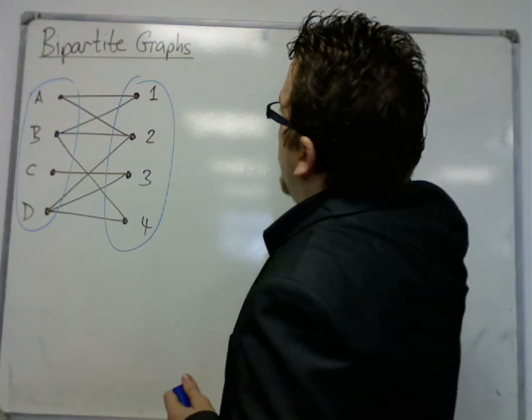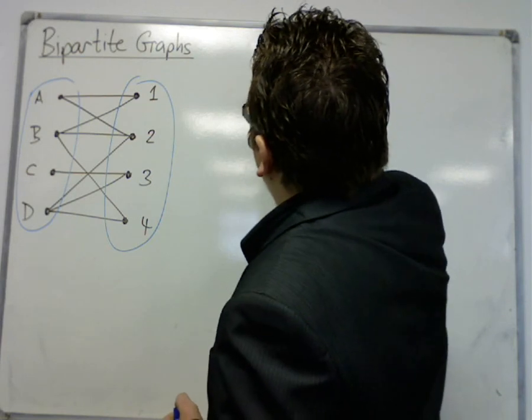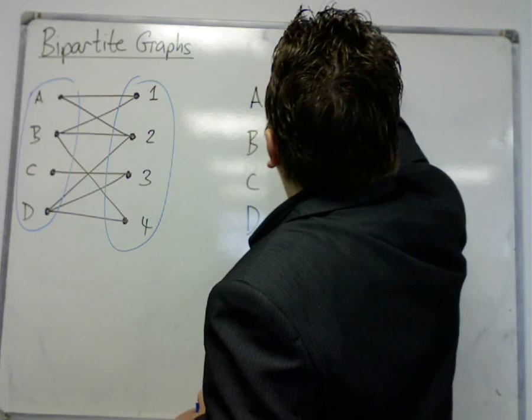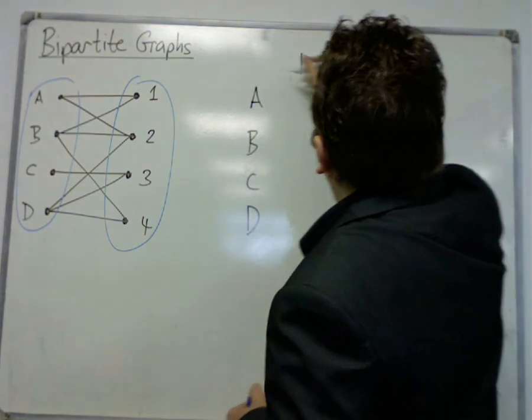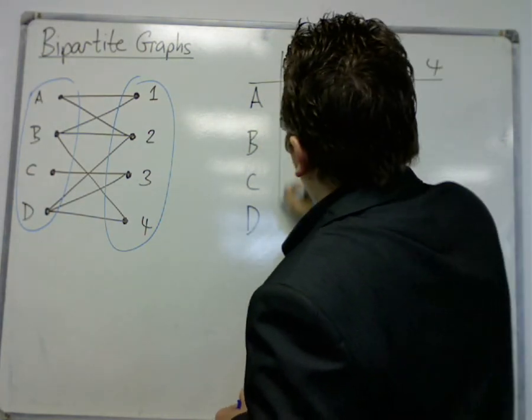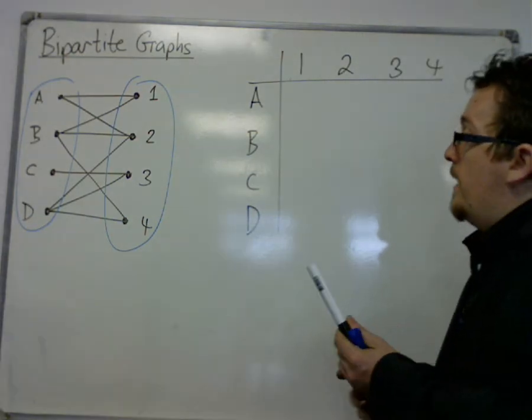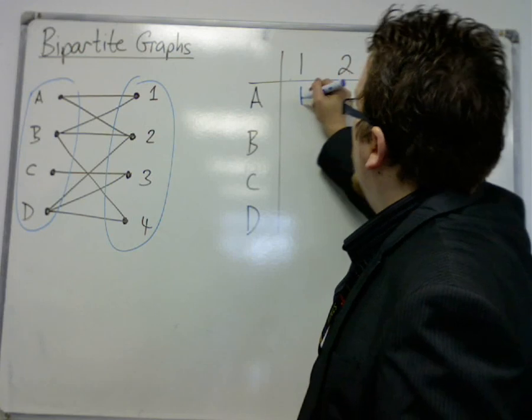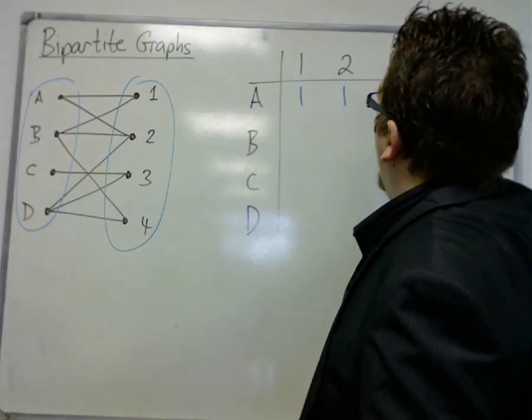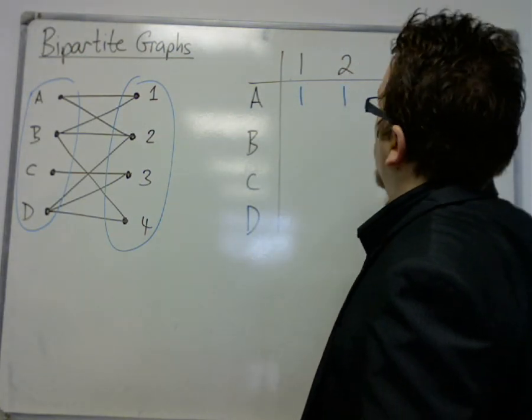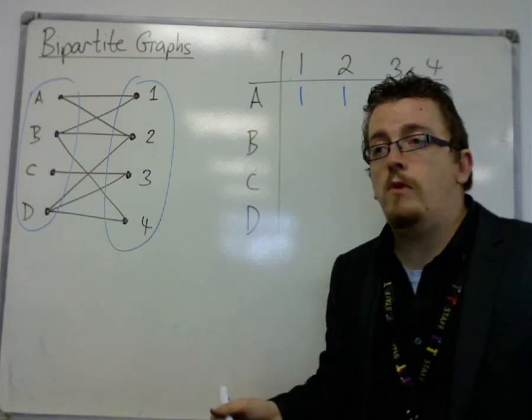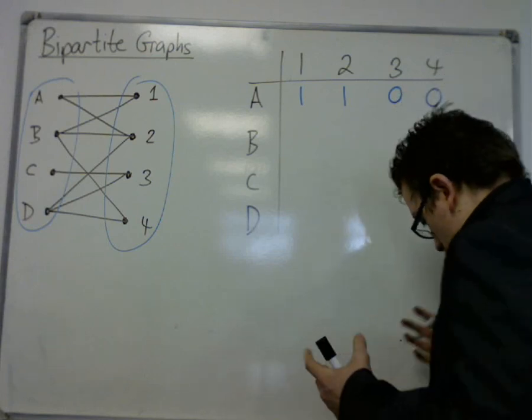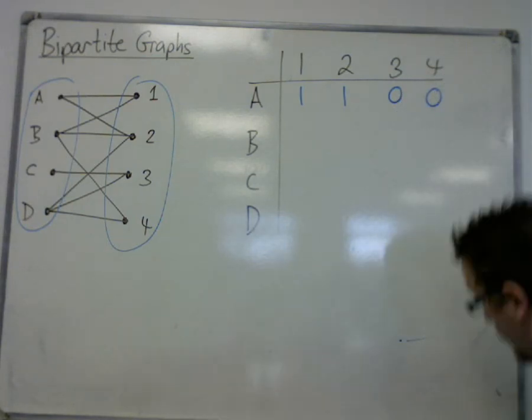And you can write this in a matrix. So A, B, C, D, and tasks 1, 2, 3, and 4. And then you can say, well, A can go to 1 and it can go to 2, but not to 3 or 4. So 1 is representing links. 0 is representing that there are no edges there.